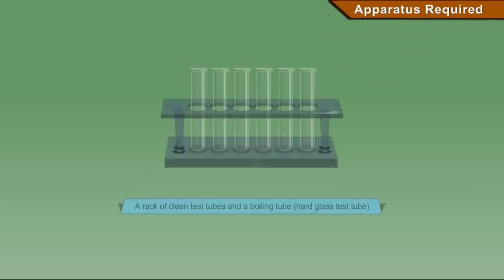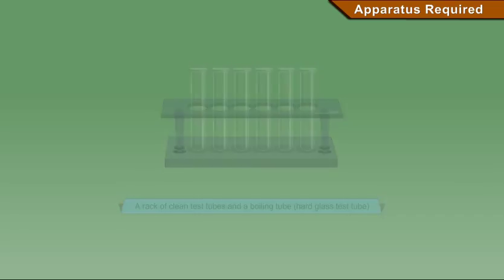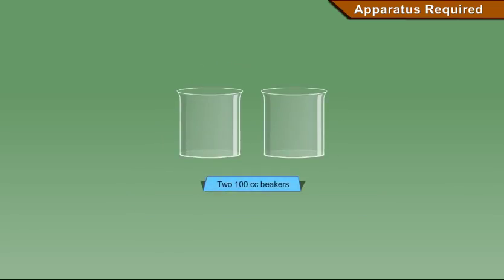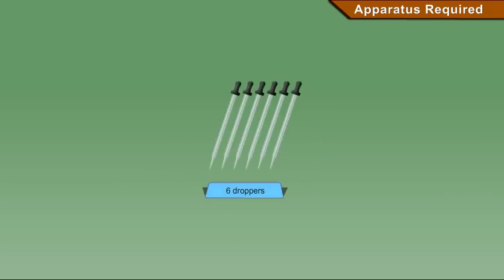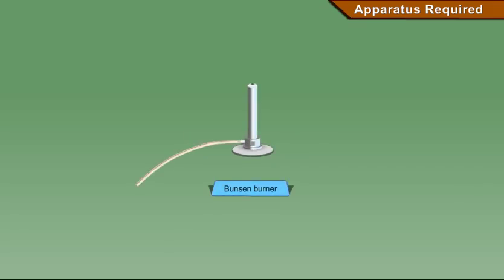Apparatus required: A rack of clean test tubes and a boiling tube, hard glass test tube, 200 cc beakers, 6 droppers, a test tube holder, Bunsen burner, and fire tongs.